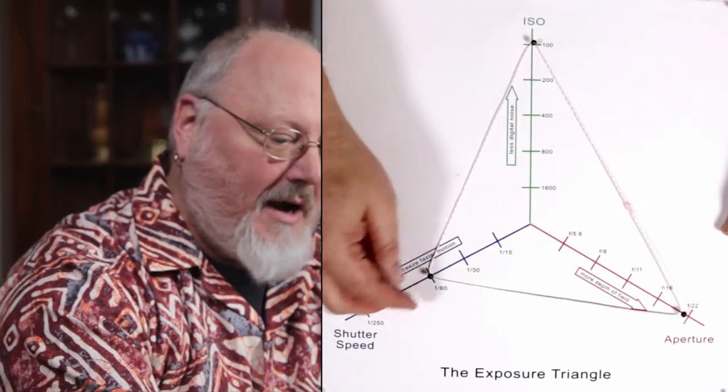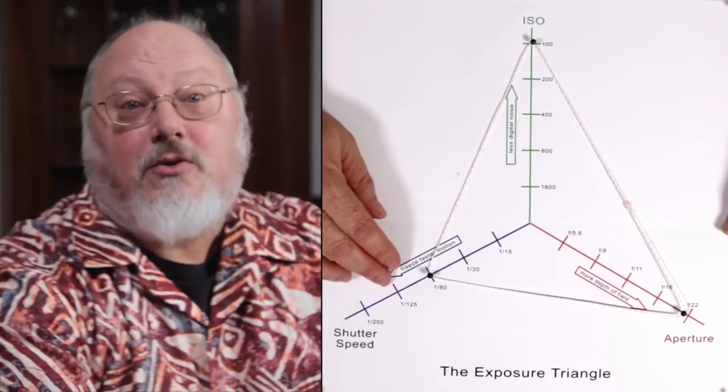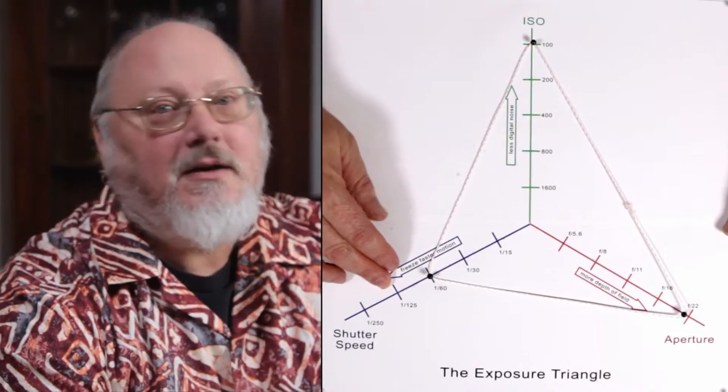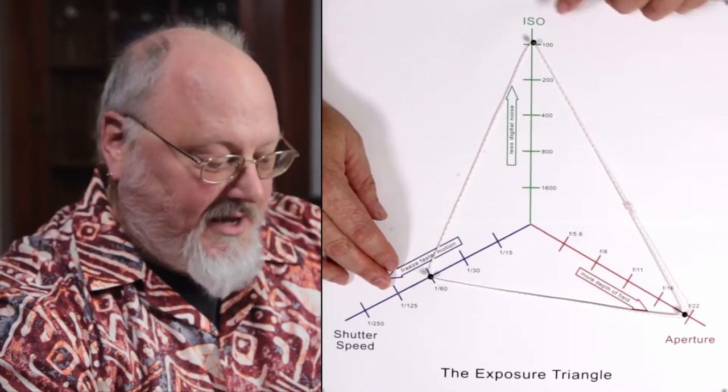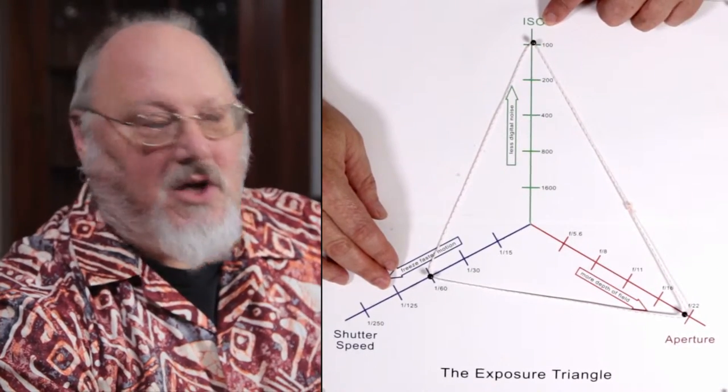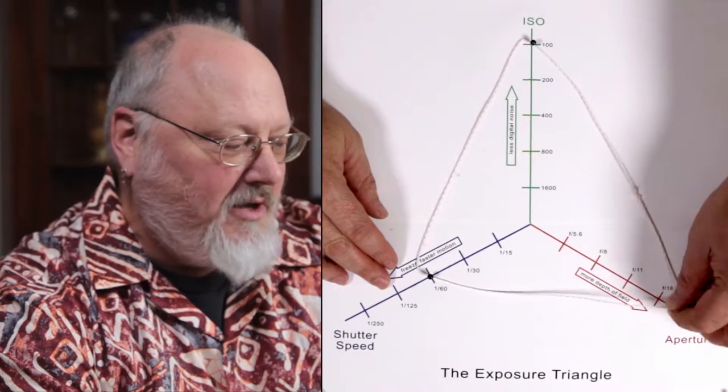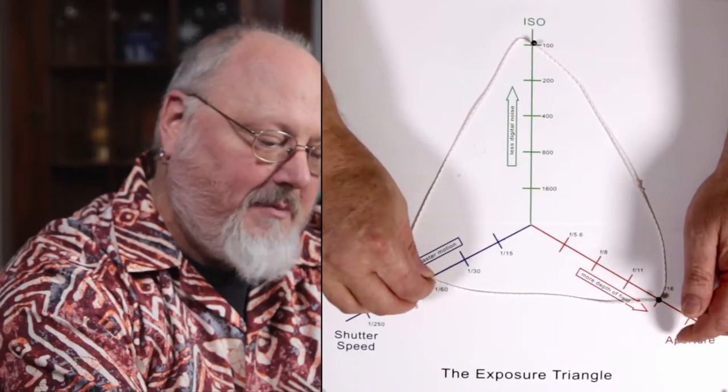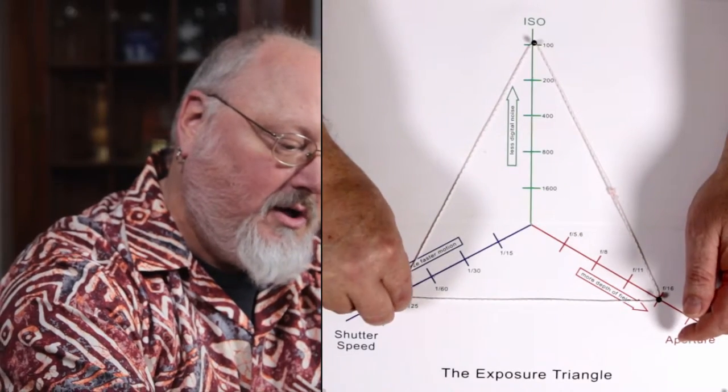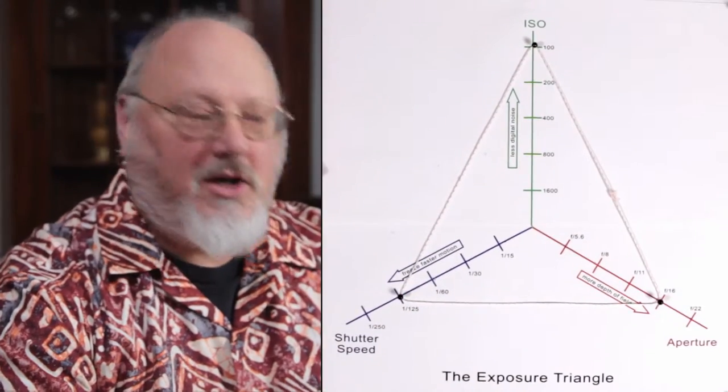So I've decided that I really need to have at least a 125th of a second. So then the decision I have to make is do I want to sacrifice some aperture or sacrifice some ISO? So let's say I've decided I can really handle going to an F16. So that means now I can move this up to 125th of a second and get a good exposure.